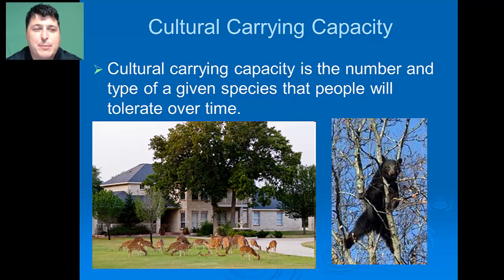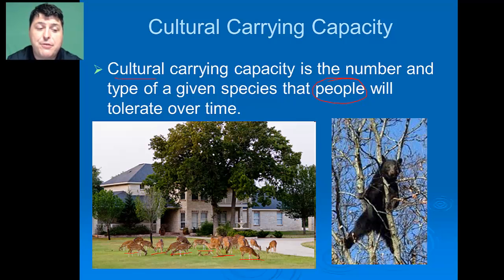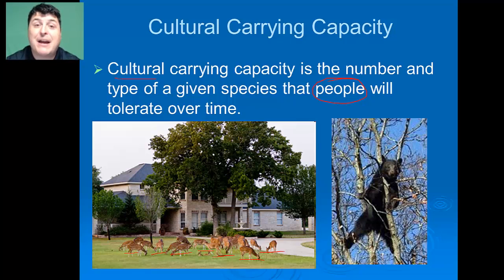There's another kind of carrying capacity worth mentioning: the cultural carrying capacity. The cultural carrying capacity is the number of a particular species that people can tolerate over time. For example, an area can support a large number of healthy deer in the environment, but as a result of people not wanting deer around due to car accidents or them eating expensive shrubbery, the cultural carrying capacity might be much less than the biological carrying capacity.